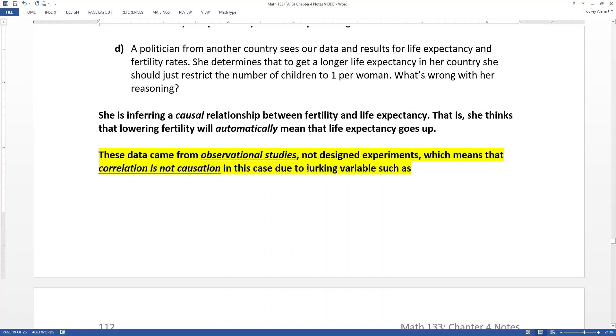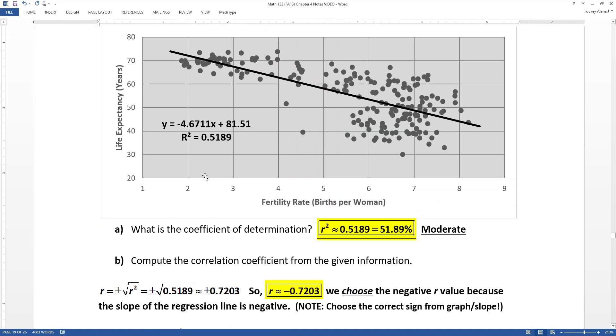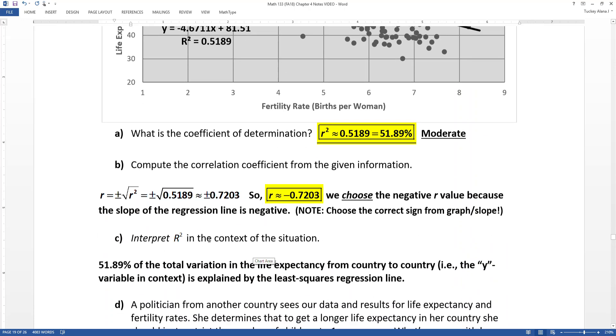And that's because of lurking variables that are things that are in the background that are affecting both the fertility rate and the life expectancy. Now, that's a key. A lurking variable, a true lurking variable will affect both of these and make the whole thing go wonky on us. So we have to think about from country to country, why would some countries have higher fertility rate and life expectancy, and some countries have lower, or excuse me, higher life expectancy, lower fertility rate, and then some countries have high fertility and low life expectancy?